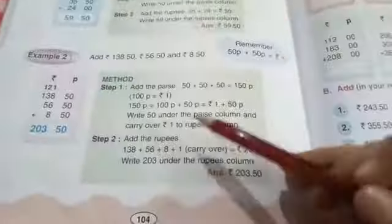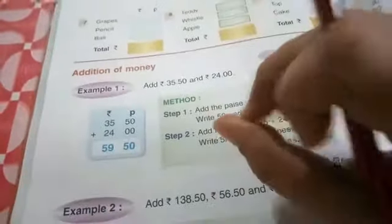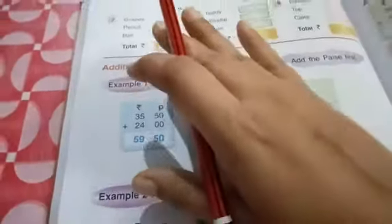So today what we will do? Today we will start the addition portion, page 104, addition of money. How can you do the addition? Very easy, in the same way as we were doing normal addition. We always start our addition from the right hand side.